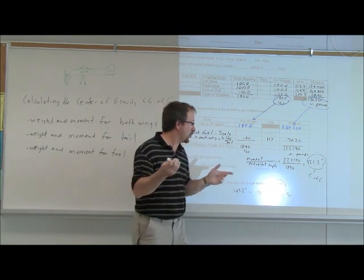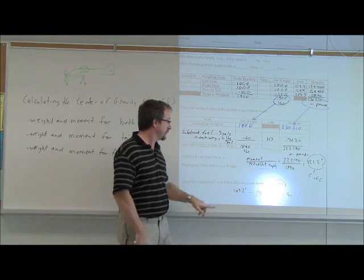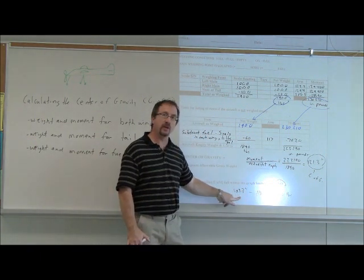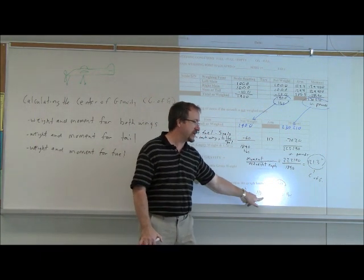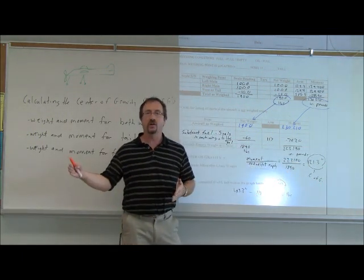Now, is that good or not? Well, when we look on the graph, which again comes with the manual, it tells us that at 1,840 pounds, our center of gravity should be between 107.3 inches and 118.3 inches. We're at 121 inches, we're too far towards the tail.